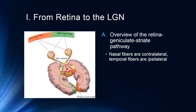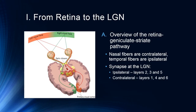The nasal fibers are contralateral and the temporal fibers are ipsilateral. They then synapse at the lateral geniculate nucleus. The ipsilateral fibers synapse at layers 2, 3, and 5, and the contralateral fibers at layers 1, 4, and 6. The cortex has six layers, as does the LGN, so we start setting up those six cortical layers here at the synapses in the LGN. We start to get that layered processing that becomes very important to columns and laminae in the primary visual cortex.